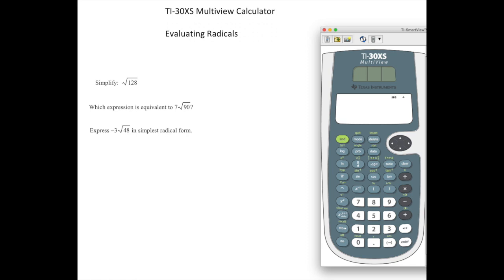The first one we're going to simplify the square root of 128. The second one states which expression is equivalent to 7 square root 90, and then the last one states express negative 3 square root 48 in simplest form.